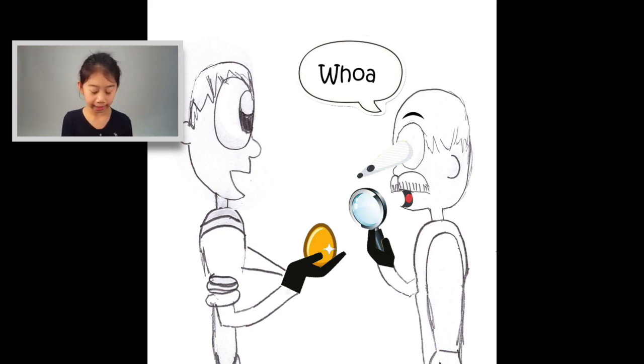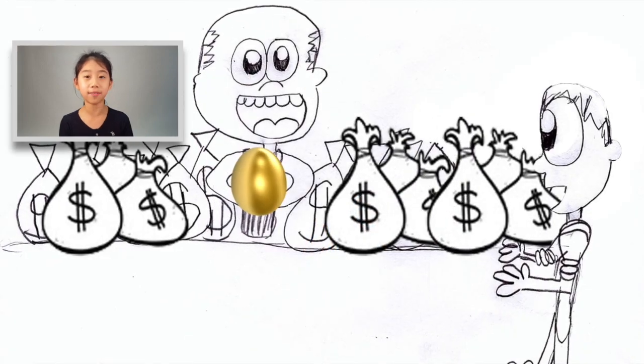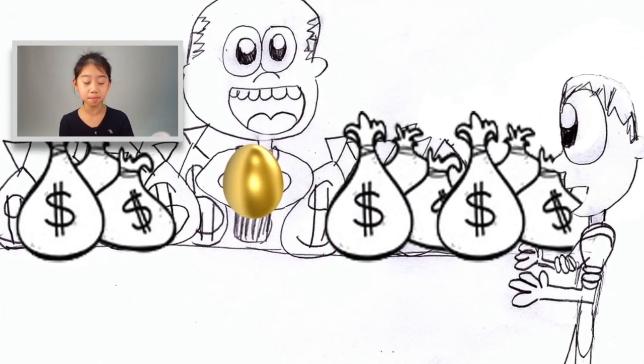He picked up his magnifying glass. Remarkable, he said, standing in close. Pure gold! And it's been made to look exactly like an egg! I've never seen anything like it! He pulled out bag after bag of coins and handed them to the man.